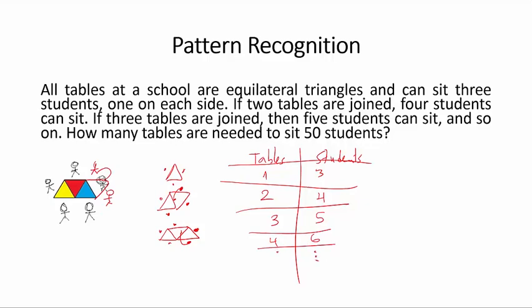And this pattern goes on. So in order to sit 50 students, since the difference between the number of students and tables is always two, you would need 48 tables.